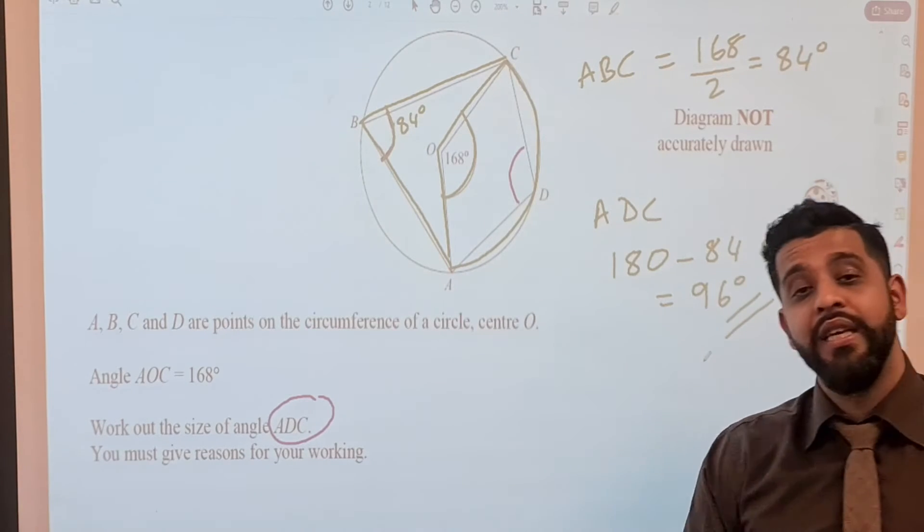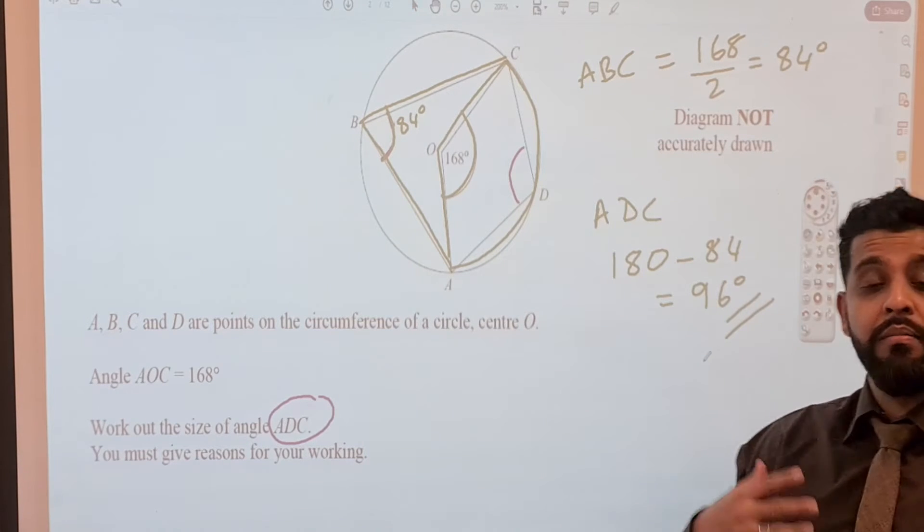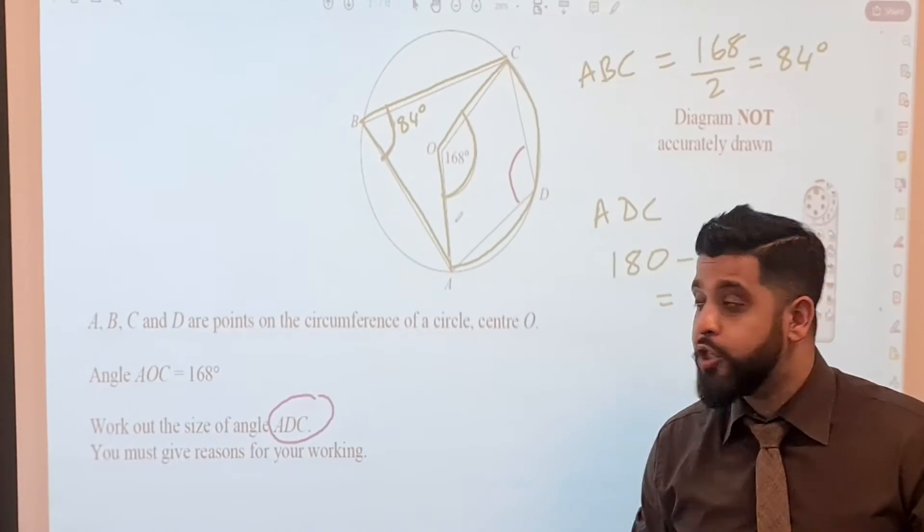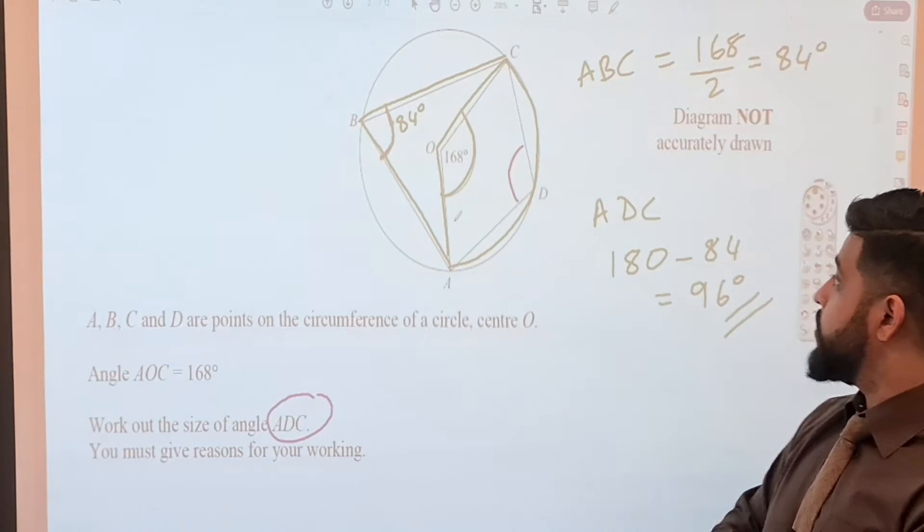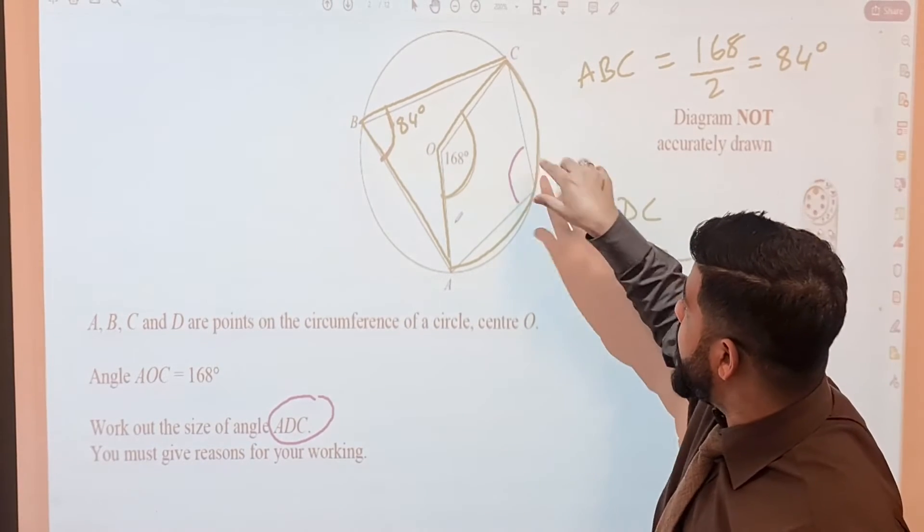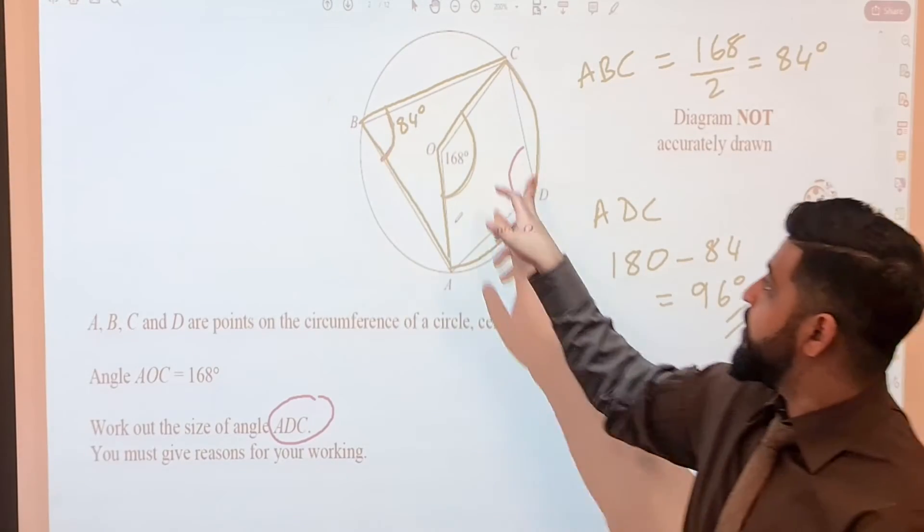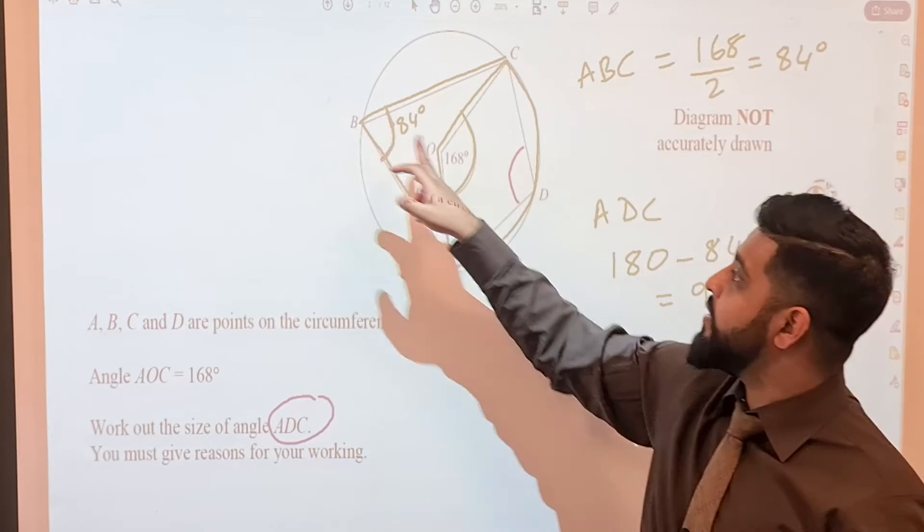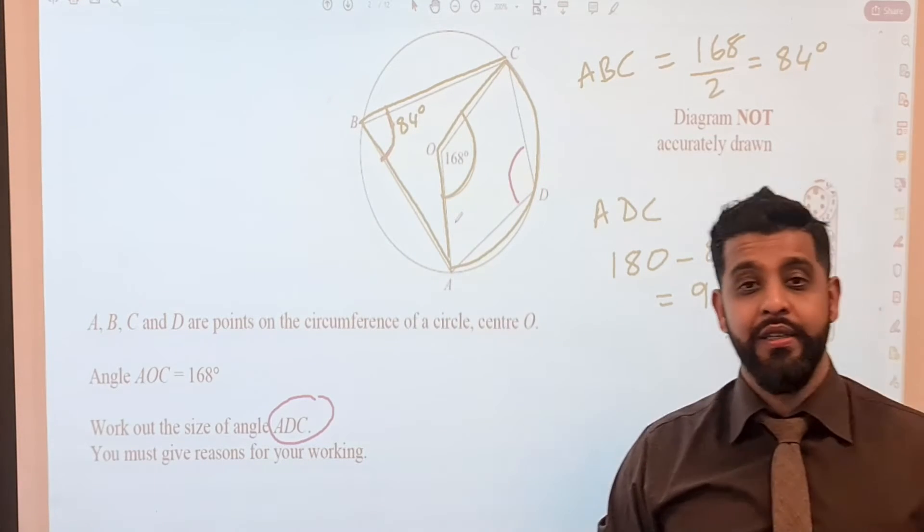Now the question does say give reasons for your working, so otherwise the marks won't be given to you completely. So please make sure that you're writing down those reasons. We use this one here because angle at the center is twice the angle at the circumference, and we use this one because we have a cyclic quadrilateral and opposite angles in a cyclic quadrilateral add up to 180 degrees.